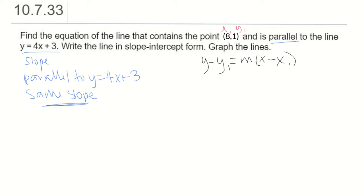Parallel to that line means that our slope is m equals 4, the exact same as what it was for the parallel line. Now we have a point on the line, x1, y1, and we have the slope, so we can plug into the y minus y1 formula.